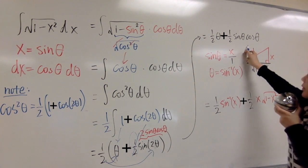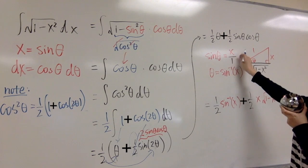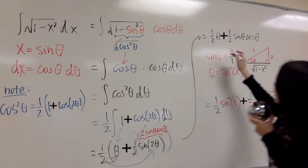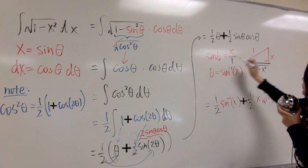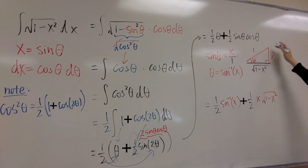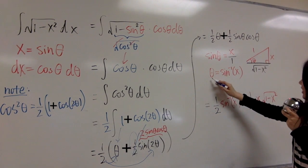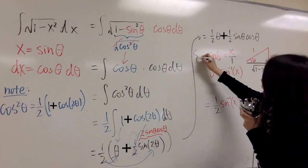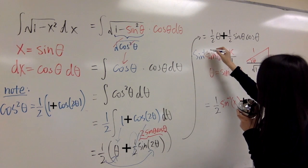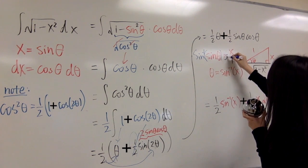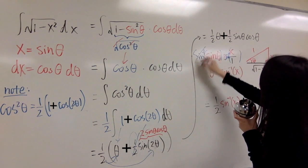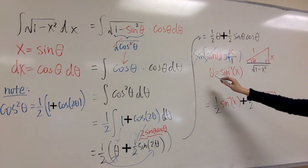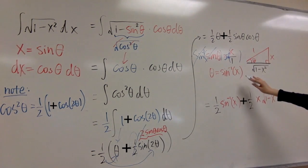So we first set x equals to sine theta here, then you can look at it as x over 1, and then you put, you graph it, it's like that, and you do arc sine both sides, cancel it out.